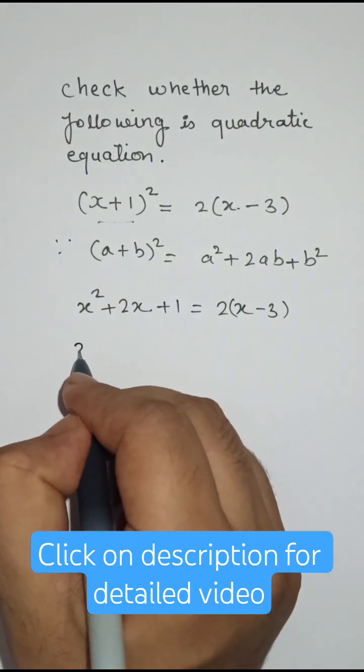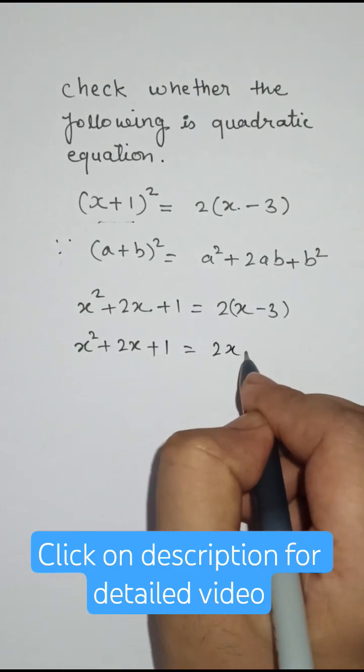Now we will simplify: x² + 2x + 1 = 2x - 6.